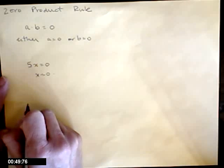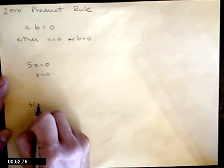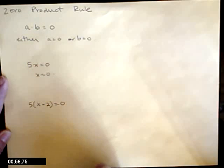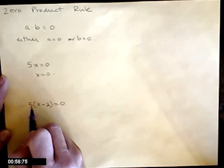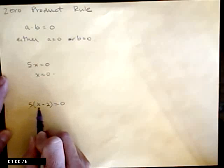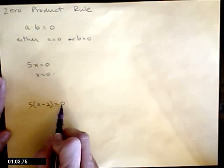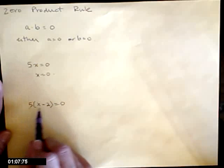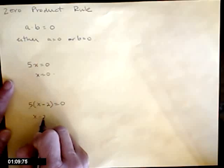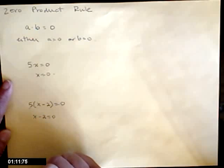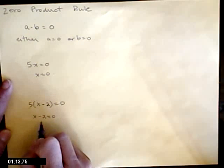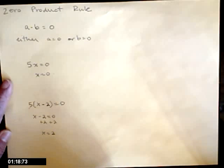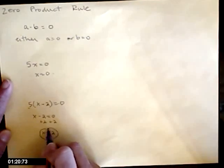If I had 5 times x minus 2 equaling zero, here's the times, so my two factors are 5 and x minus 2. The only way these two can multiply and get zero out is one of them has to be zero. The 5 isn't, so that means the x minus 2 has to be zero. If x minus 2 is zero, the x value that makes that true is x equals 2.